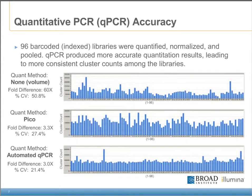qPCR can accurately quantify library fragments, especially when the qPCR process is automated. Knowing the concentration of a sample makes it much easier to produce consistent cluster counts on our flow cells. Here is an experiment where 96 indexed libraries were quantified individually by three different methods, normalized based on these quants, and then pooled together, with the goal of having equal amounts of library in each pool. We loaded each of the three pools onto a flow cell and determined the number of clusters with each of the 96 indices.